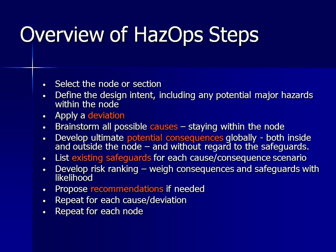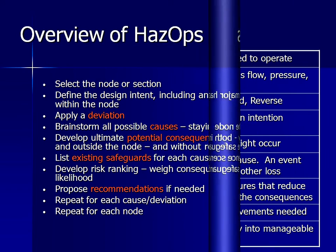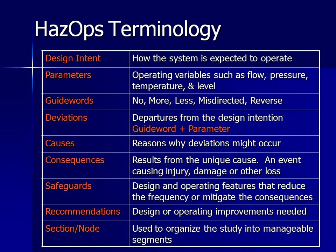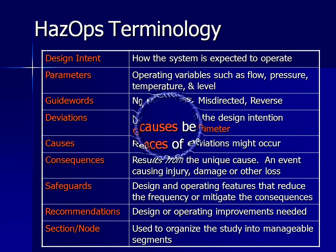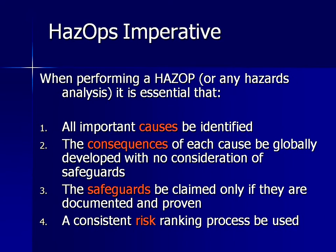We will cover the eight steps for analyzing each node of the design. You should become familiar with this HAZOP terminology to help you during a process hazard analysis. When performing a HAZOP or any hazards analysis, it is essential that all important causes be identified, the consequences of each cause be globally developed with no consideration of safeguards, the safeguards be claimed only if they are documented and proven, and a consistent risk ranking process must be used.